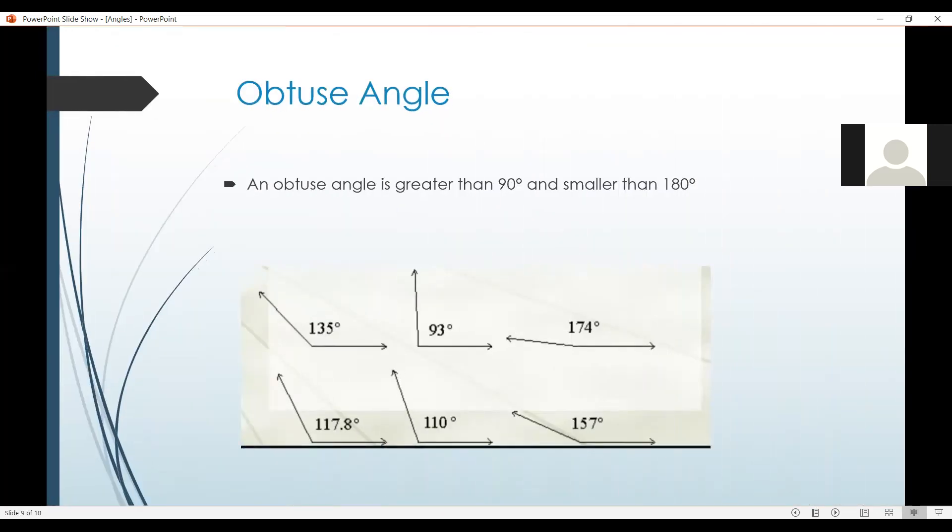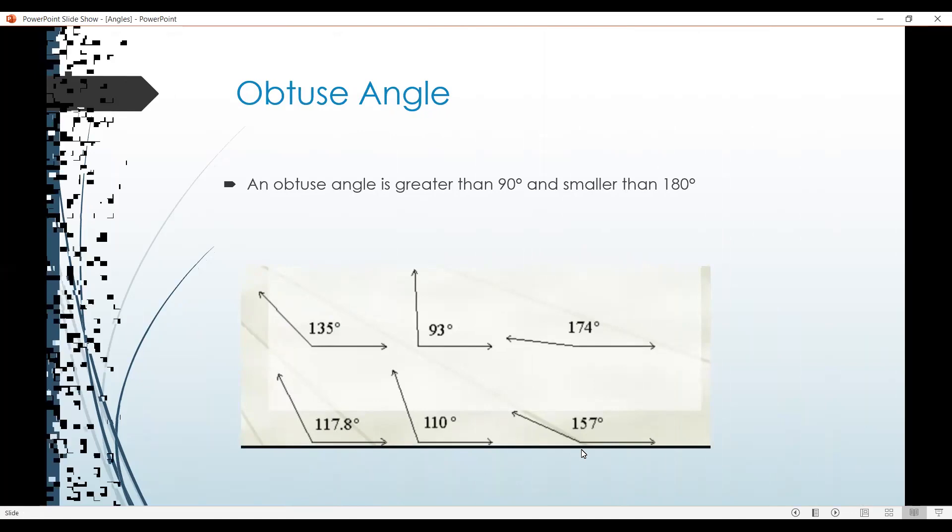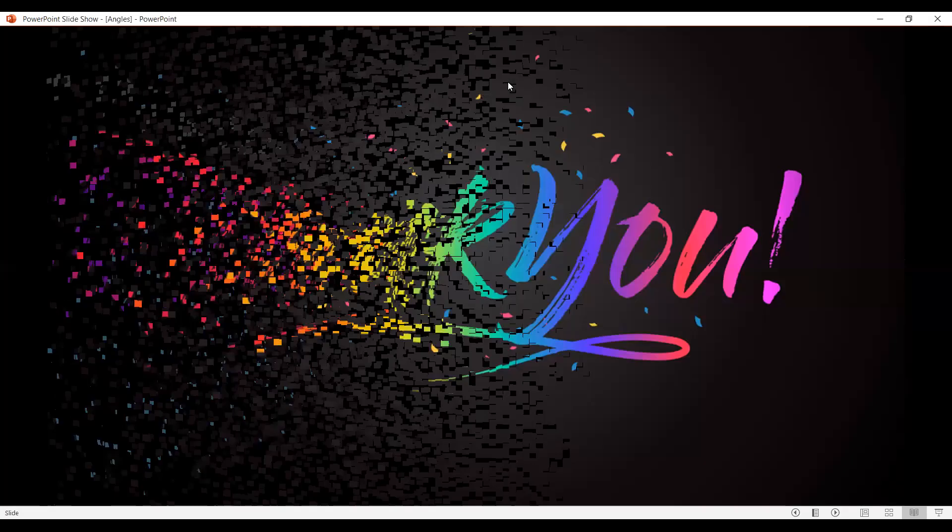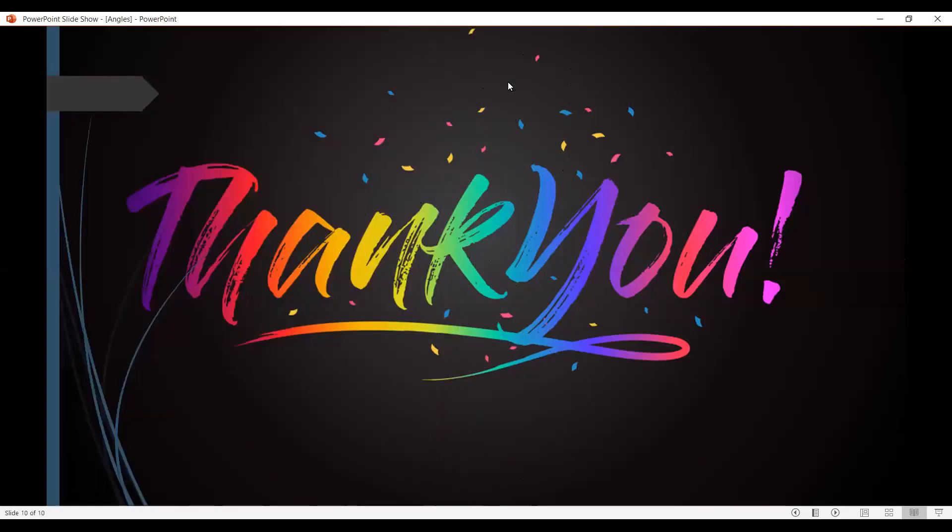An obtuse angle. An obtuse angle is greater than 90 degrees and smaller than 180 degrees. All of these are obtuse angles. Thank you and have a nice day. I hope you understand it.